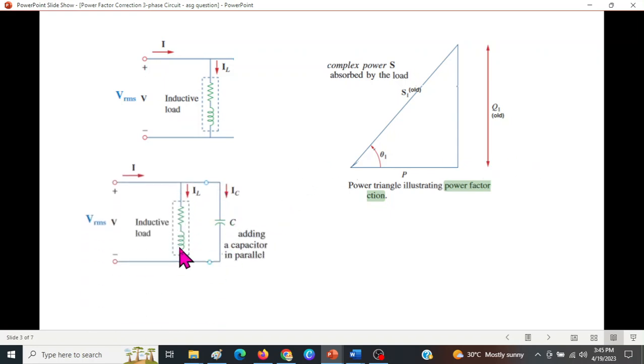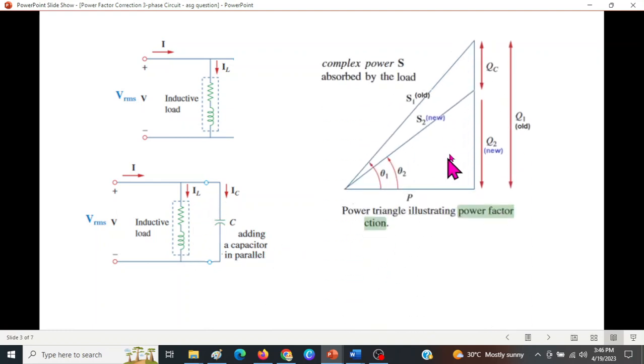For that we add a capacitor in parallel with the load. When we add the capacitor in parallel with the load, then our power triangle will get changed like this. Now the angle is reducing. Initially S was here, now S has come down, and so this is the new angle. The reactive portion has now reduced. This was the original reactive value. Now the capacitor has reduced by this amount, so the new reactive power is less. So this is the advantage.